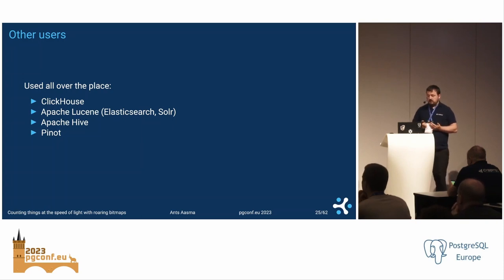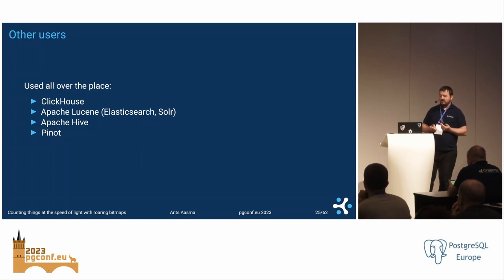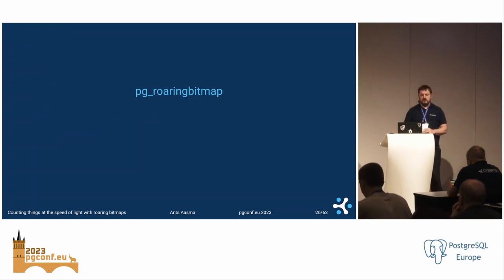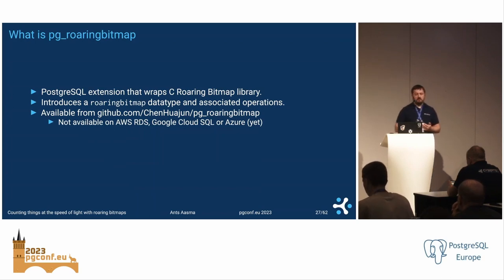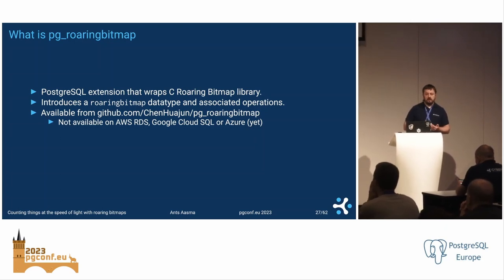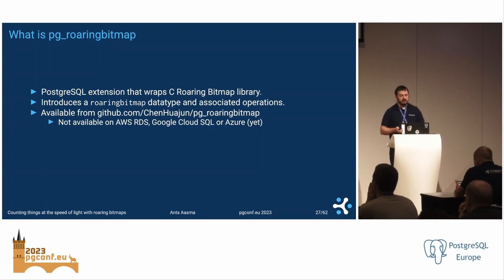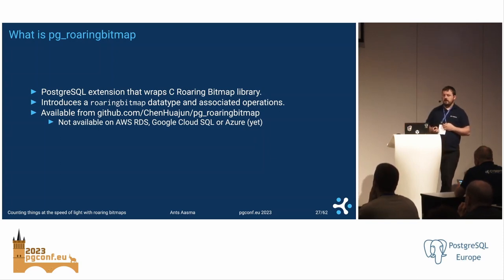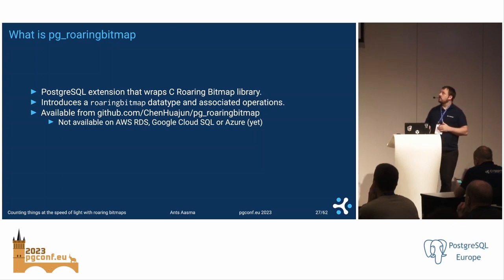This data structure is so useful that many different databases have already picked it up, including Elasticsearch — which we are trying to replace here — but also ClickHouse, Apache Hive, and all kinds of different things. We also have it in Postgres: there is an extension called PG Roaring Bitmap which wraps the Roaring Bitmap library written in C. It's statically linked, so you only need this extension — once you have it installed, it will work. You can get it from GitHub; it's not available on cloud provider database-as-a-service solutions, but you can install it if you run your own database, or pressure cloud providers to validate this extension.